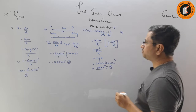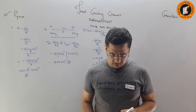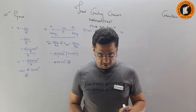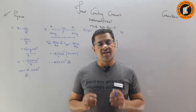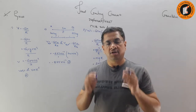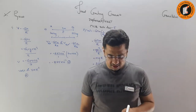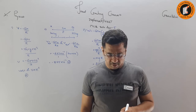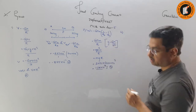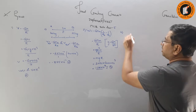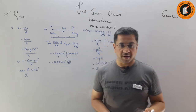Question number 4: in a gravitational field, work done in moving a mass from one point to another — gravity is a conservative force, so the work done only depends upon the initial and final positions. Therefore, the answer is: work done in a gravitational field depends on the endpoints only, because it is independent of the path followed.